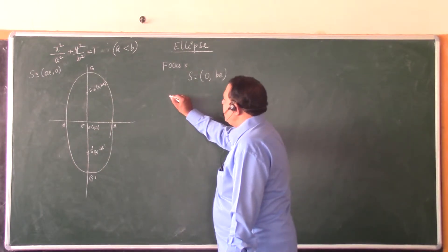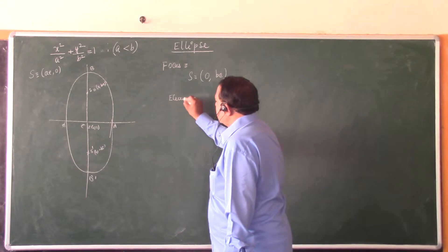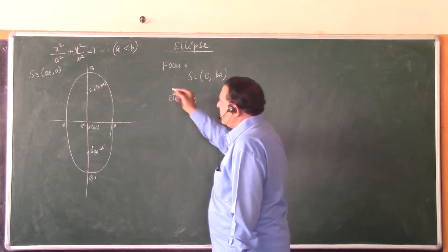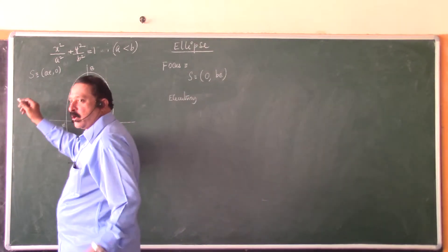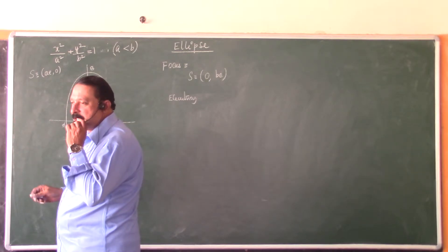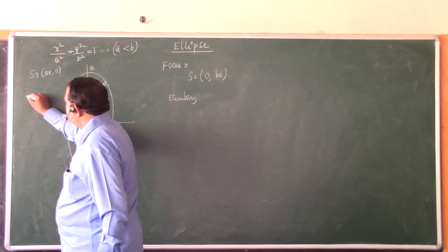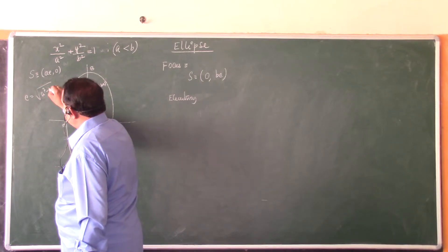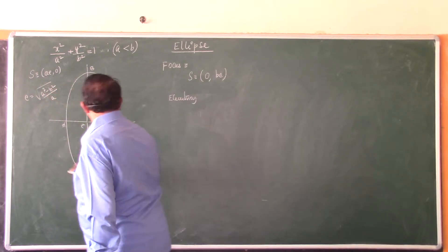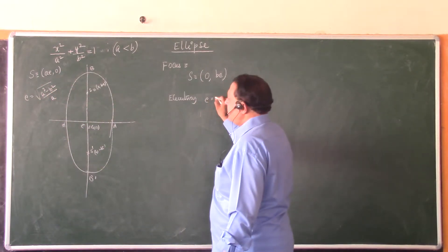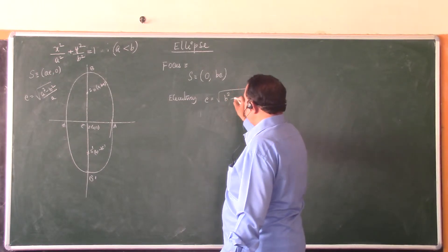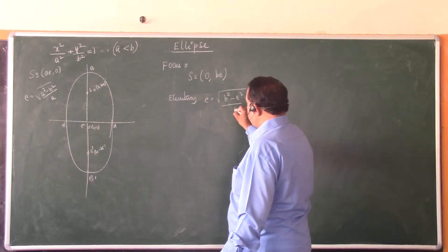What is the eccentricity for this earlier ellipse? e is equal to square root of b² minus a² divided by b.